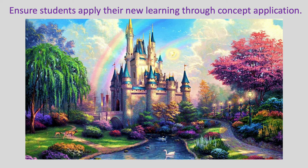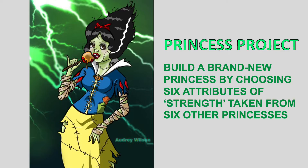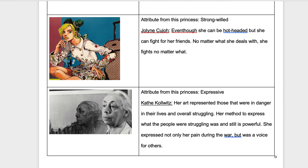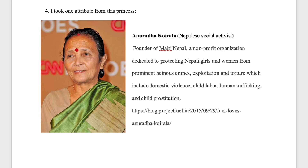And then the last thing I did was to make sure the message landed — to have them do an activity. The activity was the Princess Project: build a brand new princess by choosing six attributes of strength taken from other princesses. I think it worked better this time because of the three-step process. Students didn't just go for the typical stereotypical princesses — they really picked princesses with strength.